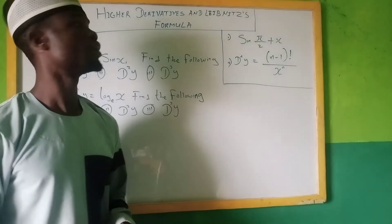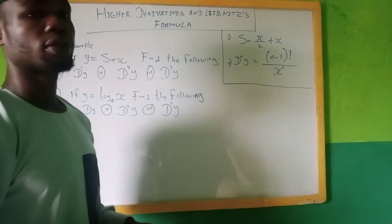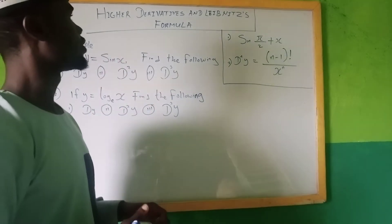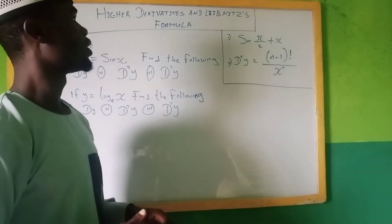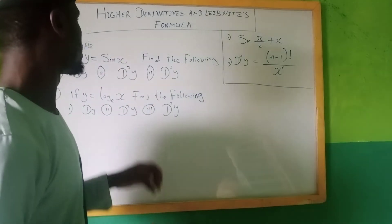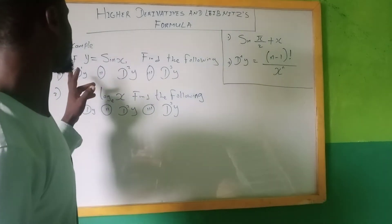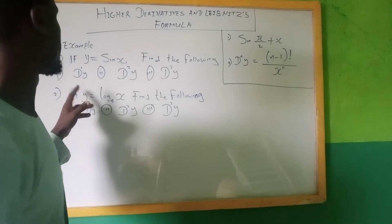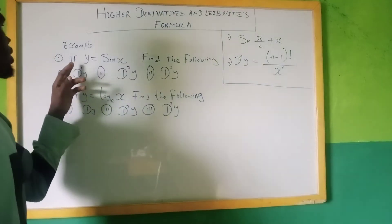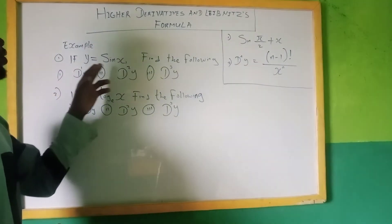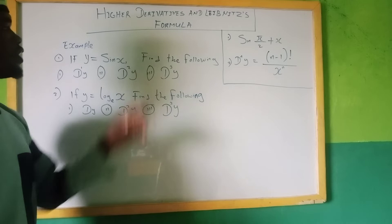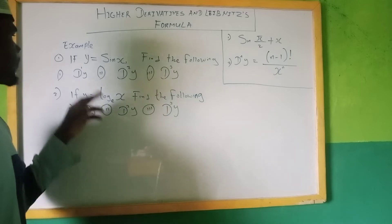Welcome guys, our today's topic is a RITICON 11S program. Now we have two examples here. If y equals sin x, find the following: the first one is dy, the second one is dy squared, and the third one is dy cubed.